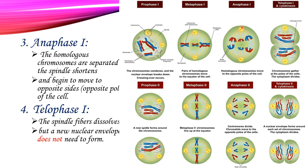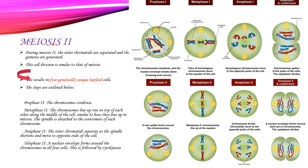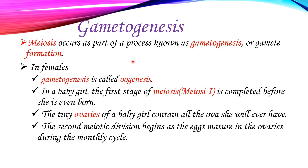In anaphase one, the chromosomes are pulled apart — homologous chromosomes are pulled to opposite poles. During meiosis two, the sister chromatids are separated and the gametes are generated. Meiosis two is similar in process to mitosis. Let's now talk about gametogenesis.